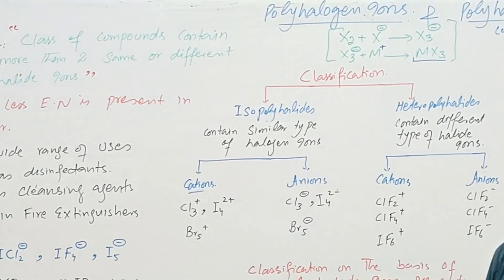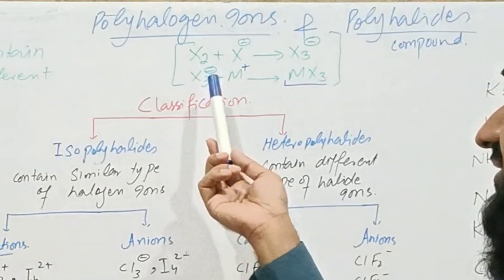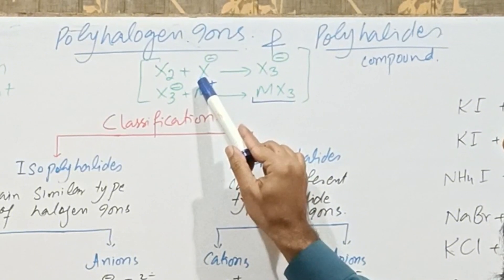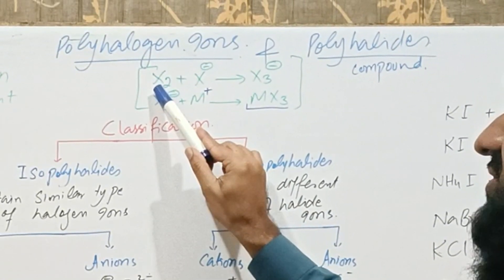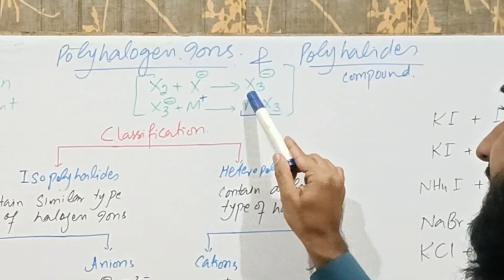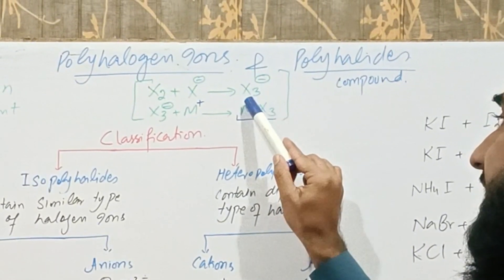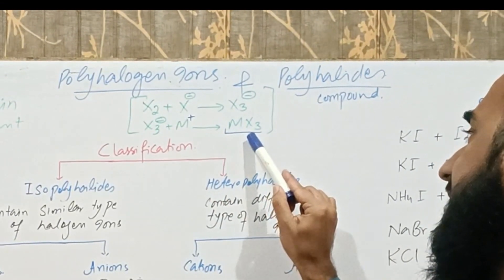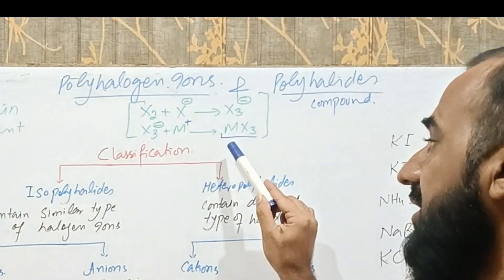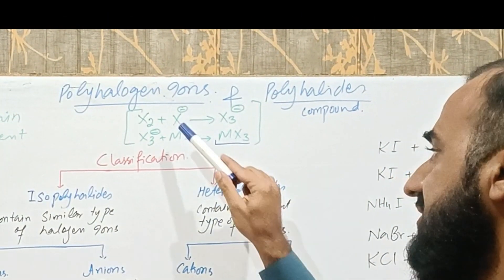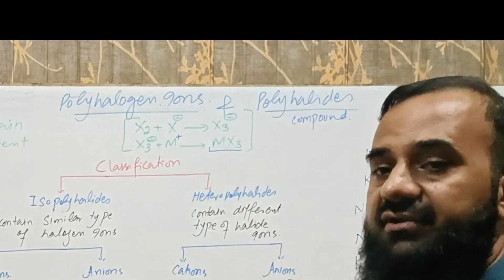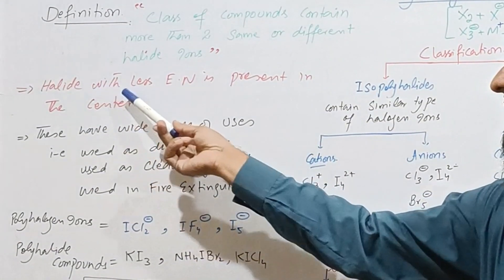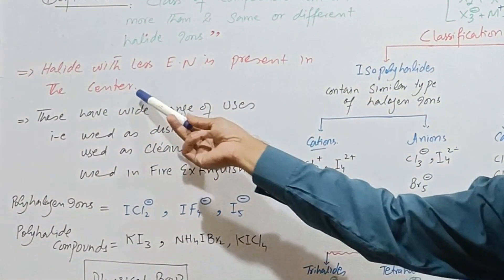How are these ions or compounds formed? For the general representation, a negatively charged halide ion reacts with a halogen to form a polyhalide — in this case a trihalide anion — which then reacts with a metal ion to form a polyhalide compound. Most polyhalide compounds are formed through this general mechanism, with the halide ion of less electronegativity present in the center.